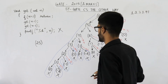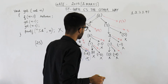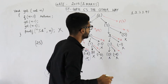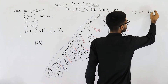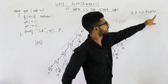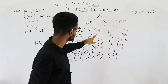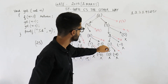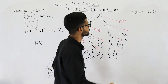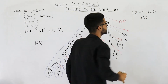Then after that we are going to have 2, 5, 1. Then we have 2, 3, 6.